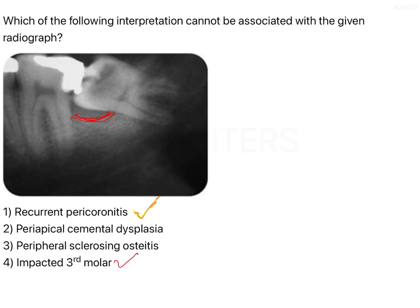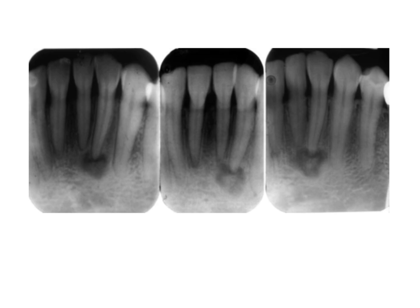In this radiograph, pericoronitis leads to pocket formation, and if the patient has a good immune system, dense bone formation can produce condensing osteitis. Periapical cemental dysplasia, on the other hand, is very commonly found in the mandibular anterior region, primarily the mandibular incisors. It is seen more frequently in women than men, typically between 20 and 40 years of age.